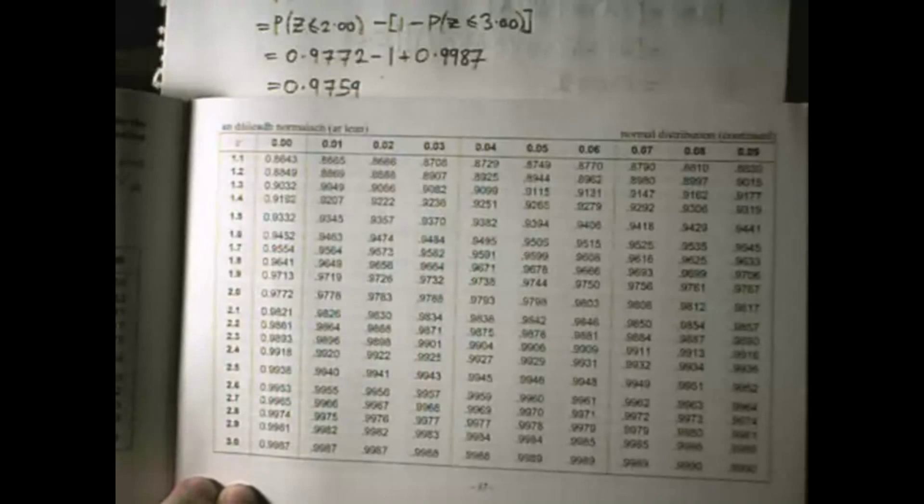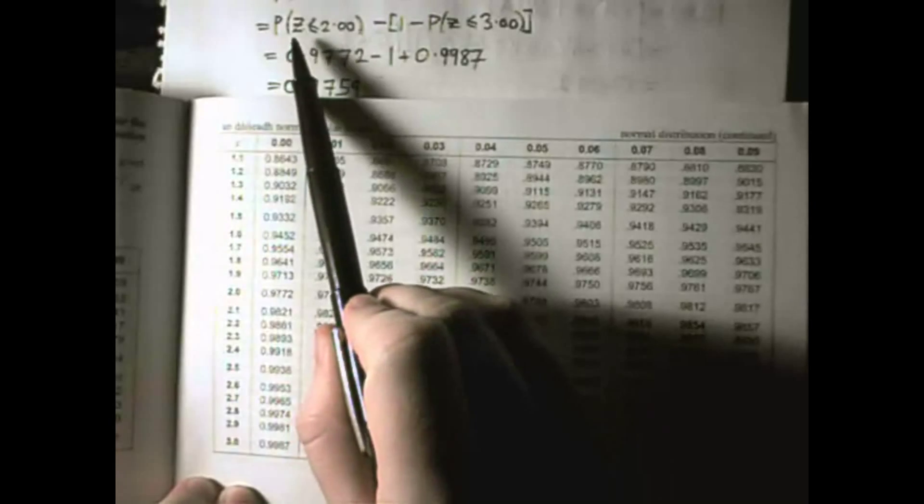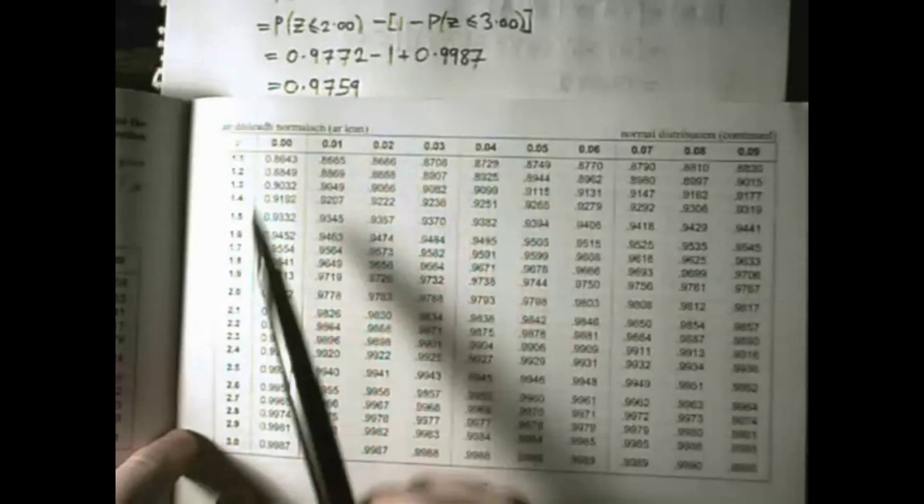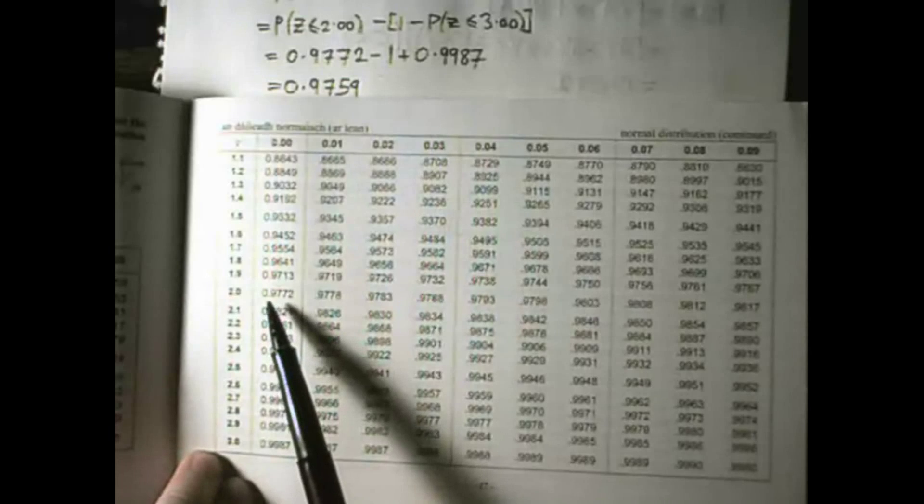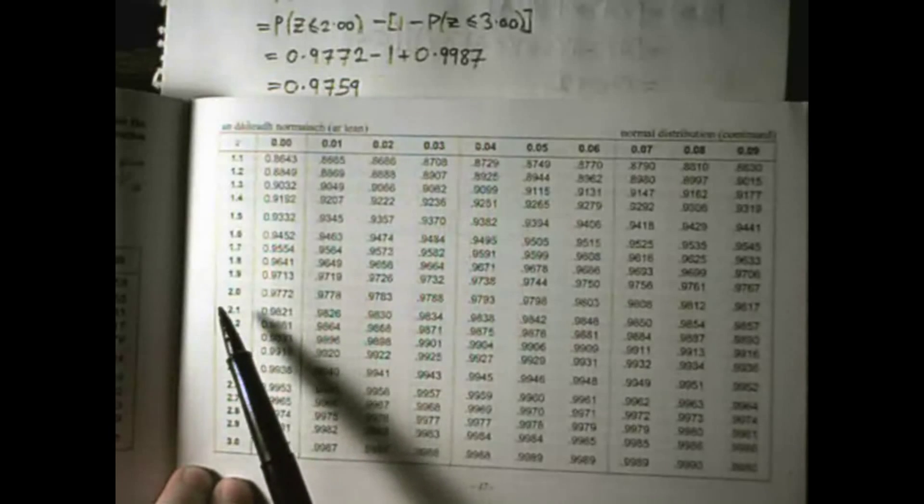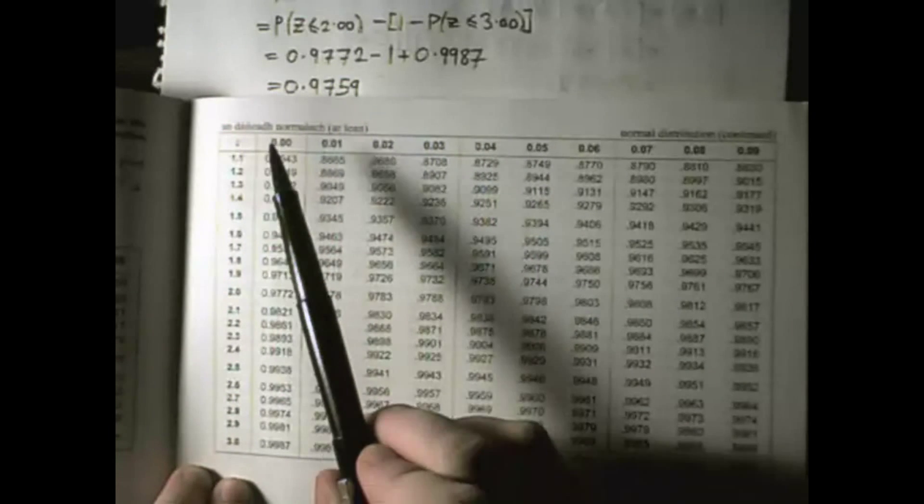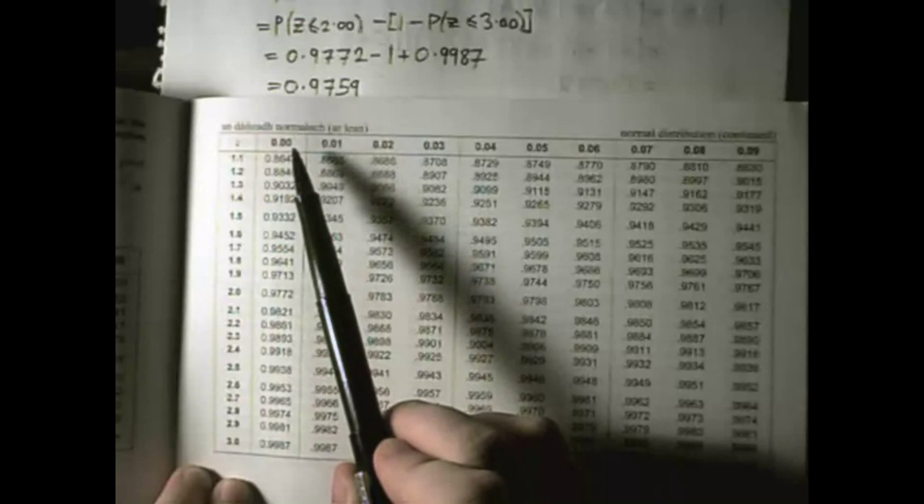Again, we can just read these values right out of the formula and tables book, page 37. We're looking where z is less than 2, so that's right here, 0.9772. Remember, you find 2.0 and the third digit is 0.